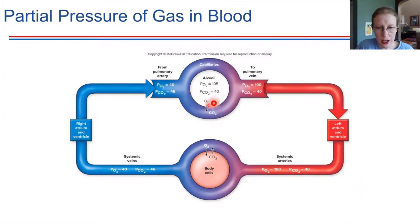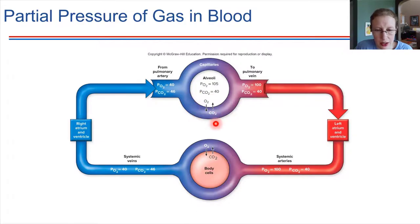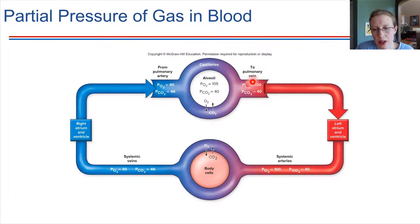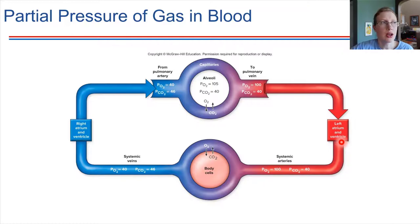Let's start in the alveoli. We just checked out what the partial pressure of these two gases was on the previous slide. Oxygen diffuses into the blood and carbon dioxide diffuses out — that's the gas exchange that takes place. The blood then goes into circulation, traveling back to the left atrium of the heart, then into the left ventricle, and gets pumped out through the aorta into the systemic circuit. It goes out to the body, delivers oxygen to all of the tissues, and takes up carbon dioxide from those tissues.